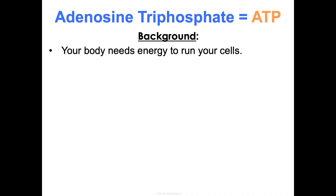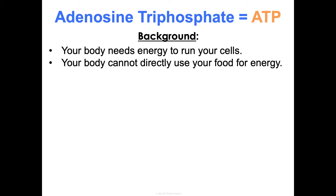This unit is all about the flow of energy — how does energy get all the way from the sun down into your cells for you to use? Because your body needs energy to run your cells. And here's the thing: your body cannot directly use your food for energy. So whether you had a bowl of Cinnamon Toast Crunch this morning, a bagel, or you're just drinking Dunkin' Donuts coffee right now, your body cannot directly use the energy that's in those things as is.